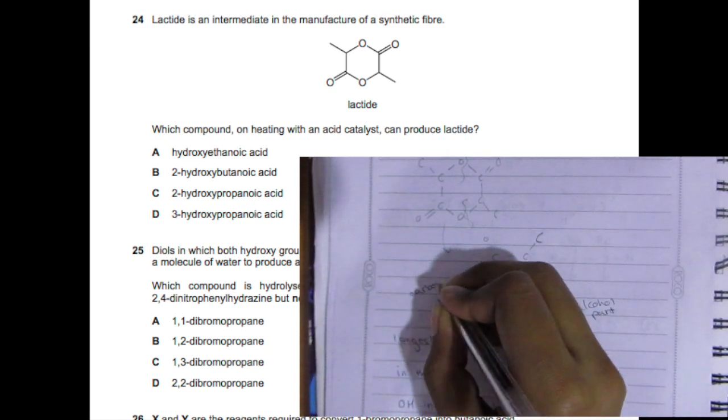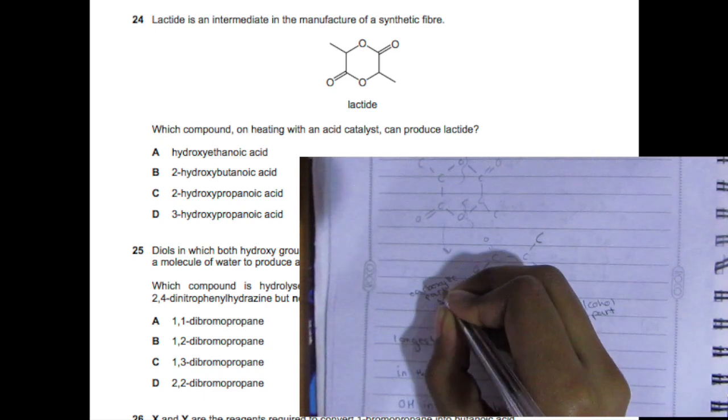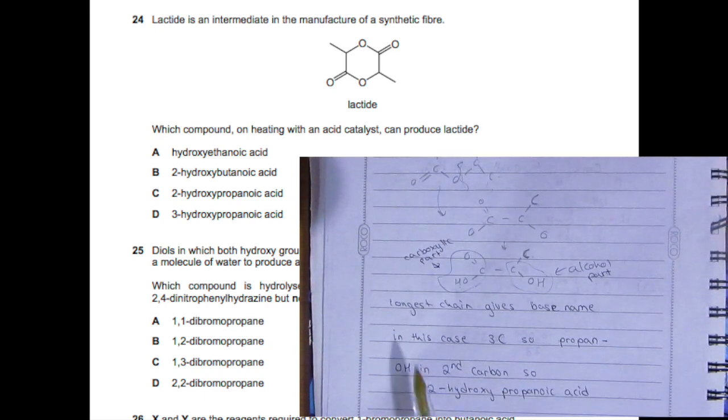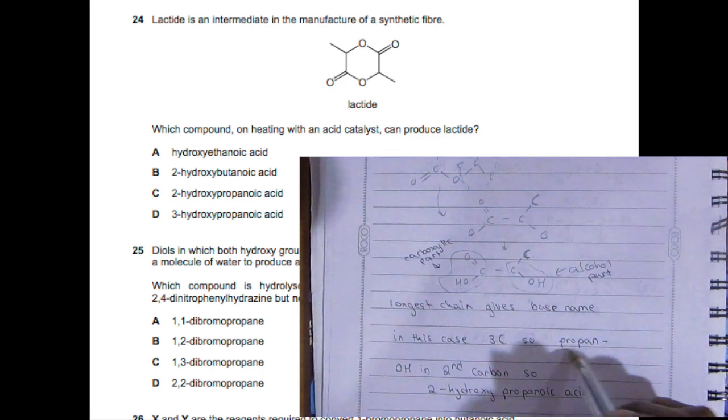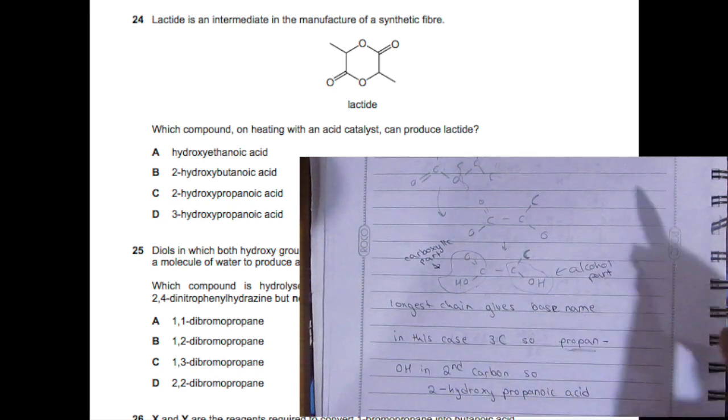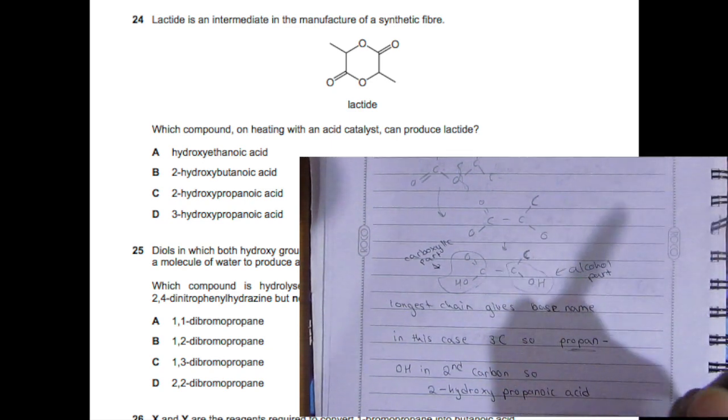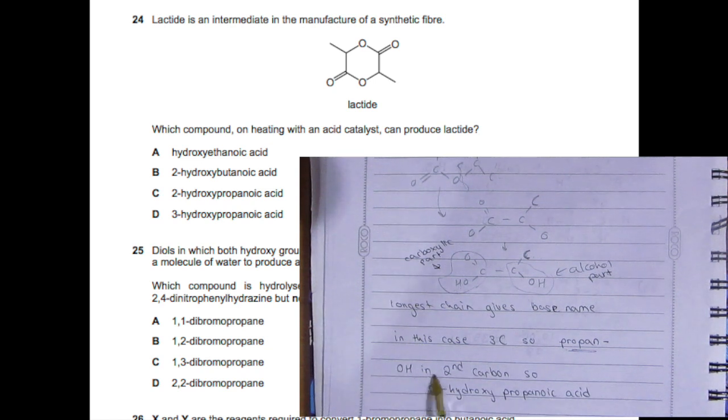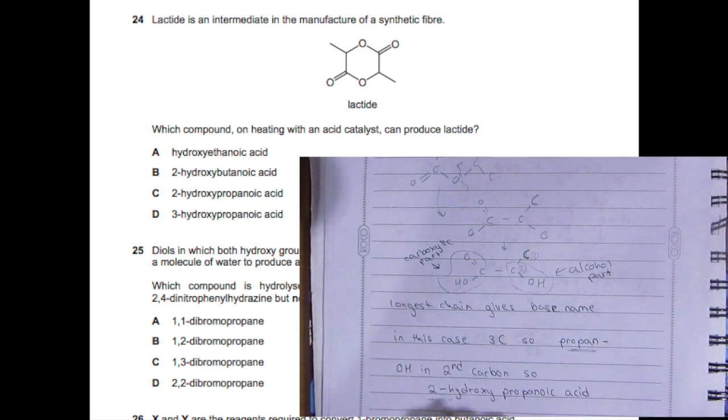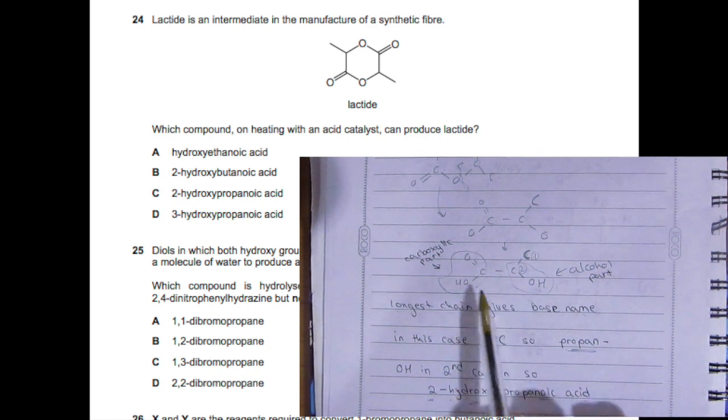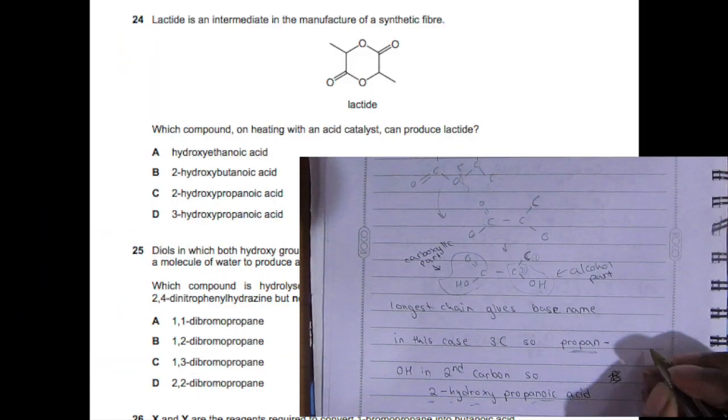Carboxylic part. Now in order to name this, the longest chain gives the base name. So you can see one, two, three - so that is propane. Ends with propane because it's meth, eth, propane, and so on. Then the OH in the second carbon, so 2-hydroxy propanoic acid. First carbon, second carbon - so 2-hydroxy propanoic acid, because it is a carboxylic it ends with -oic acid. So the answer is C.